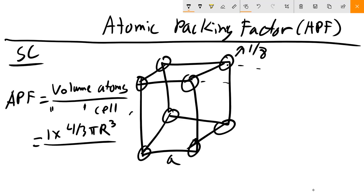We're just going to approximate as a sphere, four-thirds pi R cubed, and divide that by the volume of our cell. For simple cube, it's just going to be a cubed, and we want a cubed in terms of R.